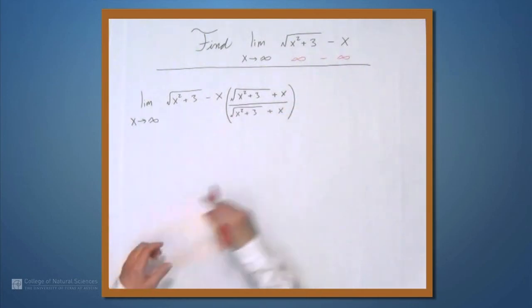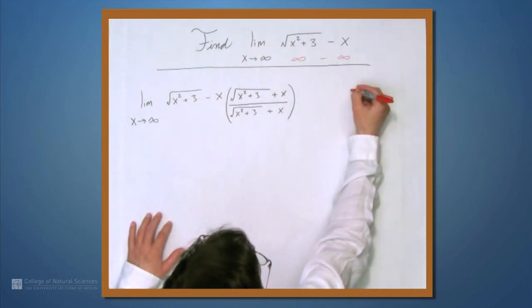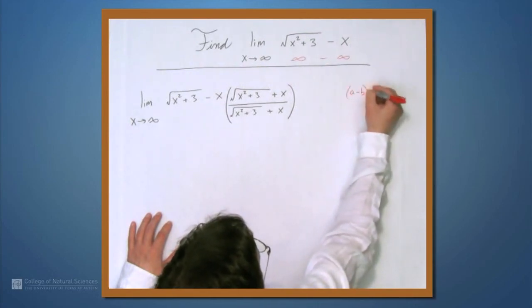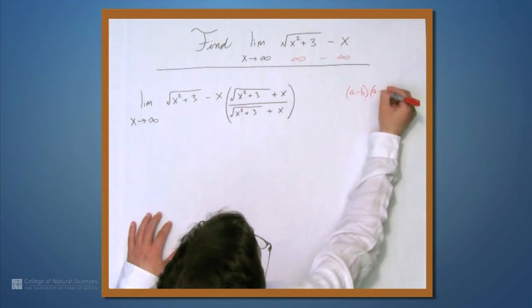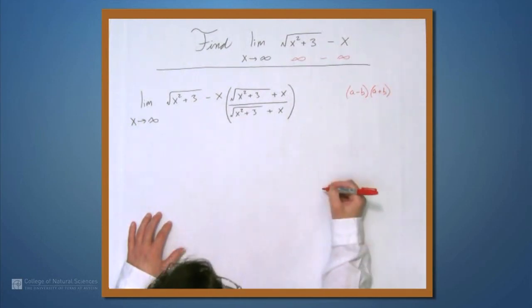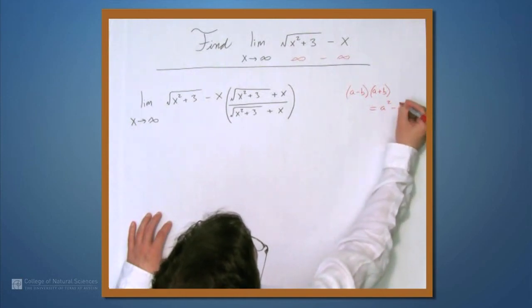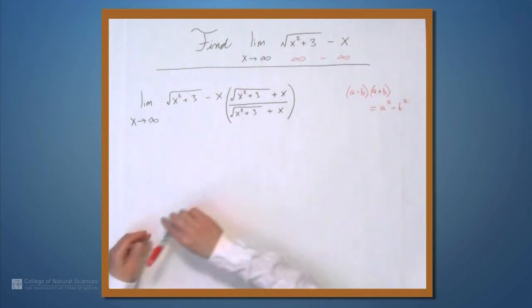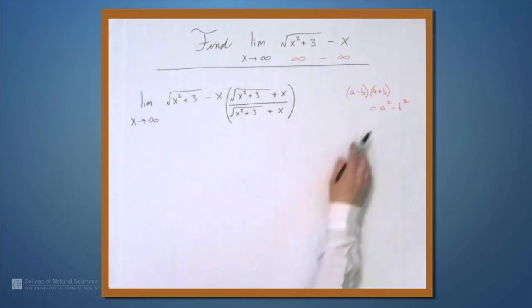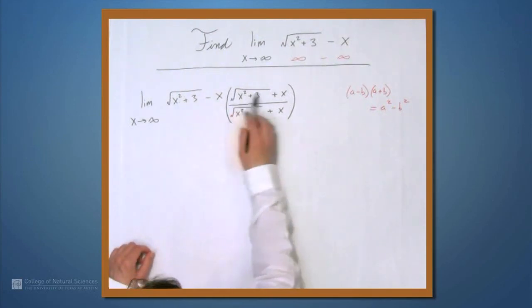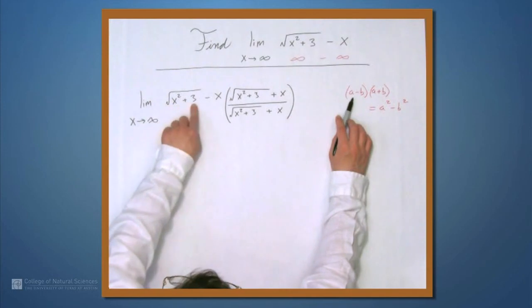Now why does this work? This is really just the difference of squares formula. If I think of a minus b times a plus b, multiplying this out gives a squared minus b squared. This will have the fortunate effect of getting rid of this square root in the numerator because a is this square root term, so it's going to turn into a squared, which is x squared plus 3.